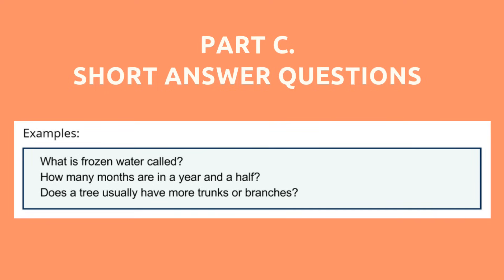Now for Part C, here are examples of the questions you need to answer. "What is frozen water called?" — It's ice. "How many months are in a year and a half?" — One year is 12 months plus half a year is 6, so that's 18. "Does a tree usually have more trunks or branches?" — Obviously branches. You can make a mistake with your answer but do not intentionally do so. Always answer — never skip a question.